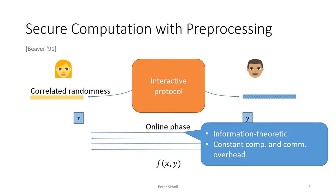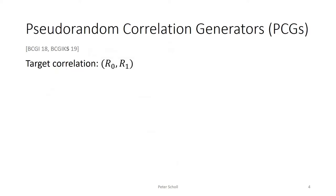However, the main drawback of this approach is that to generate the correlated randomness in a secure way, the parties have to run an interactive protocol. This pre-processing protocol is what typically dominates the overall secure computation cost in practice. A pseudorandom correlation generator, or PCG, is a tool that can potentially avoid this expensive preprocessing phase in secure computation.